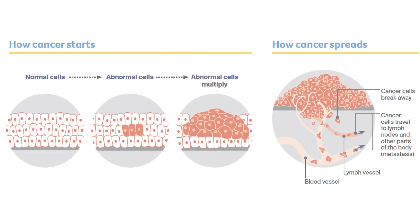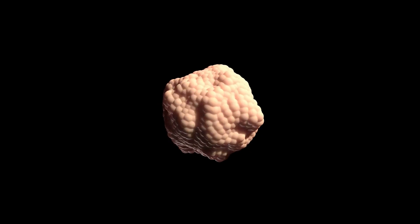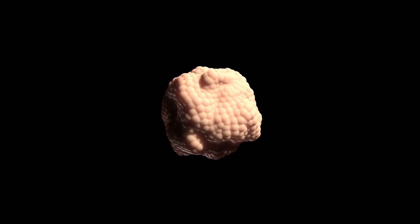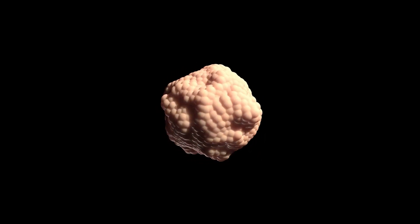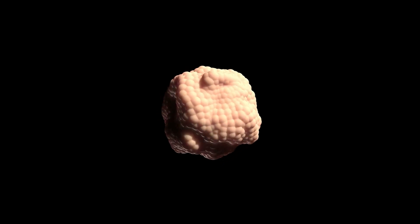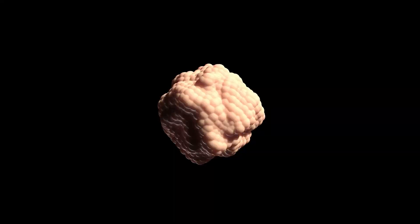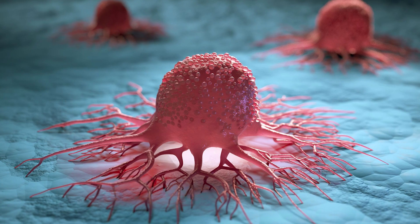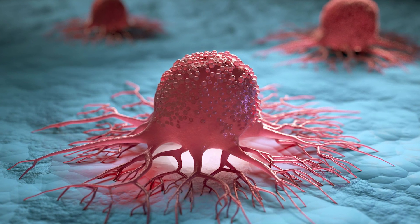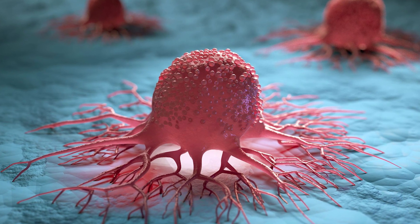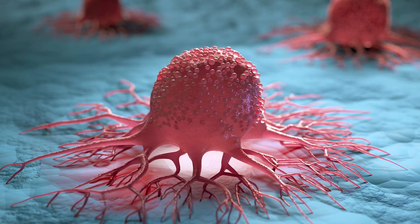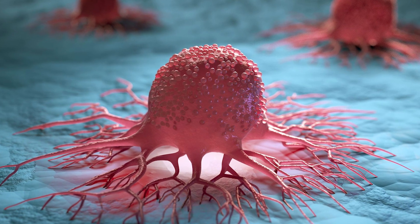When abnormal cells multiply in the liver, it may develop tumors. These tumors may be benign or malignant. Benign tumors are not cancerous and are rarely life-threatening; they're localized, which means they don't typically affect nearby tissue or spread to other parts of the body. Malignant or cancerous tumors can spread into nearby tissue, glands, and other parts of the body, and can come back after treatment. These tumors can be life-threatening.